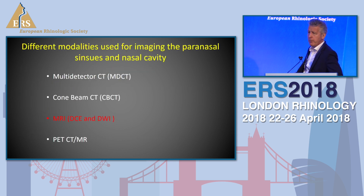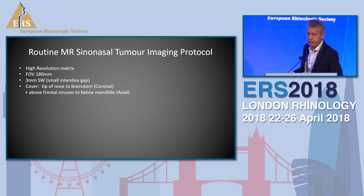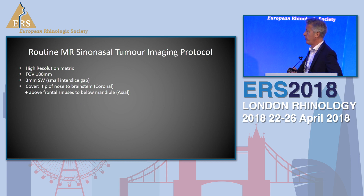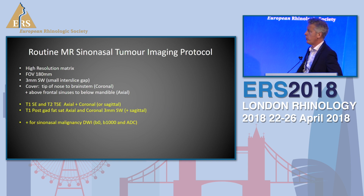What about MRI and dynamic contrast imaging and diffusion-weighted imaging? This is a pretty conventional protocol. You have to use three millimetre or less. You go from the tip of the nose to the brain stem on the coronal, and above the frontal sinuses to the mandible on the axial. The workhorse sequences we all use are T1, T2, axial and coronal - sometimes sagittal. This is all well known, including fat saturation.